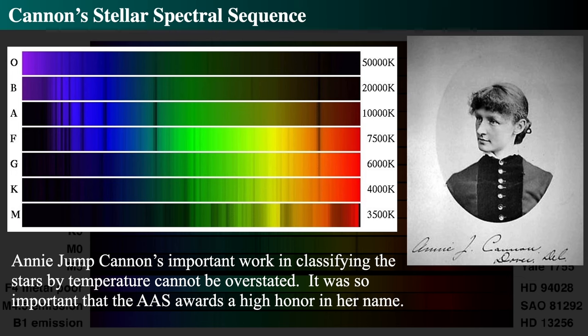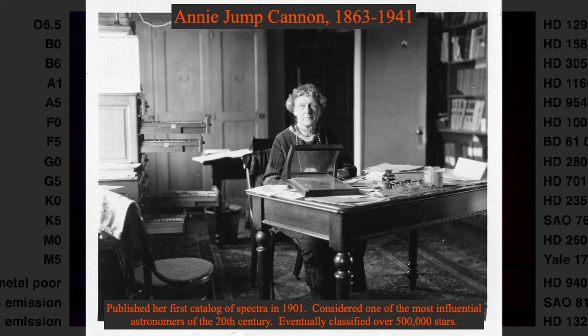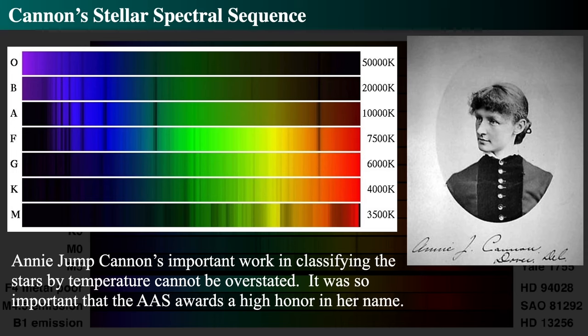Half a million of anything is a very hard thing. If you imagine it took one to two minutes per classification — say two minutes on average — that works out to a million minutes of stellar classification throughout her entire career. That's astonishing. There's a reason why the Annie Jump Cannon Award from the American Astronomical Society is one of the most prestigious awards one can receive for lifetime research in astronomy.